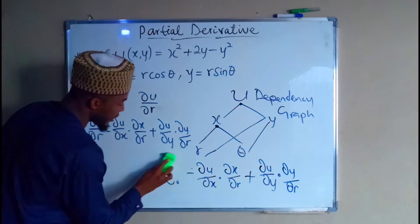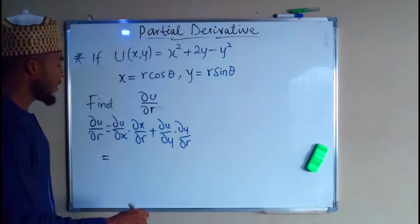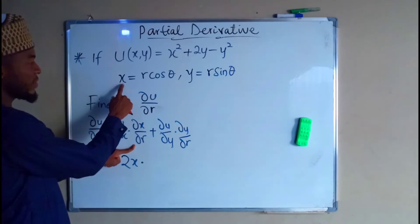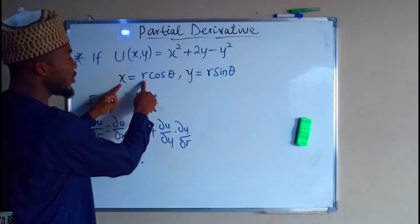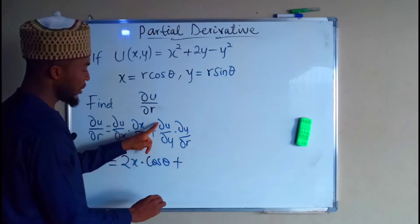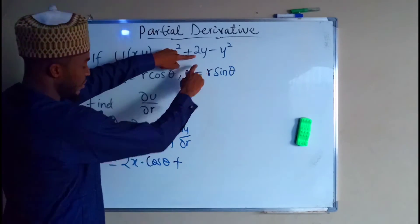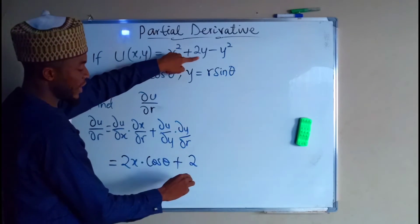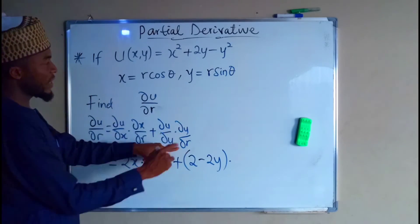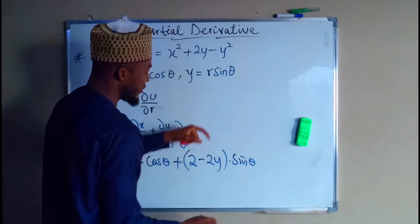Now let us substitute into this formula. This equals du/dx — we differentiate u with respect to x keeping y constant — which gives 2x, times dx/dr. If you differentiate x with respect to r, you obtain cos θ. Then plus du/dy — differentiating with respect to y keeping x constant — gives 2 minus 2y, multiplied by dy/dr. Differentiating y with respect to r gives sin θ.